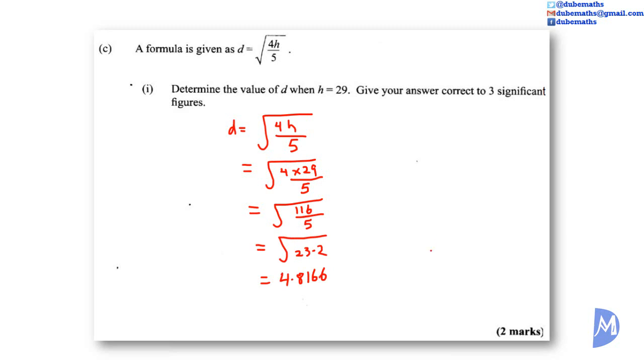We are asked to give the answer correct to 3 significant figures: 1, 2, 3. So 4, 8, 1 are 3 significant figures. We see that the first number discarded is the 6 which is 5 or greater, so we add 1 to the last figure. So we get 4.82 which is correct to 3 significant figures.